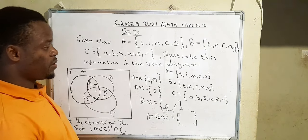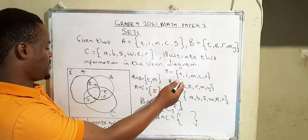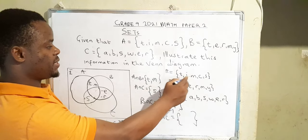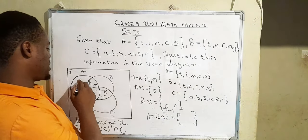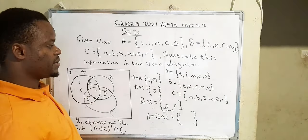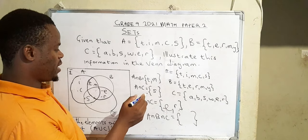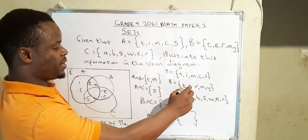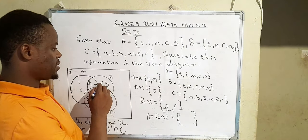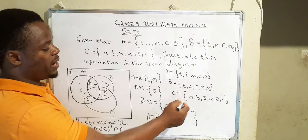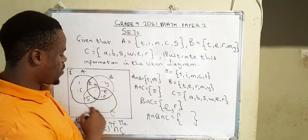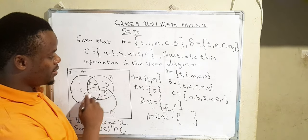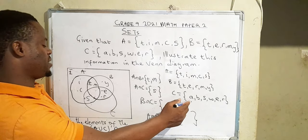So we can now check. If this is A, and out of there we have actually indicated S, T, M, then what remains is I and C. We go to B. If we have actually picked T, M, E, R, what remains is Y. We come here, we have A, B, S. So section C is here.